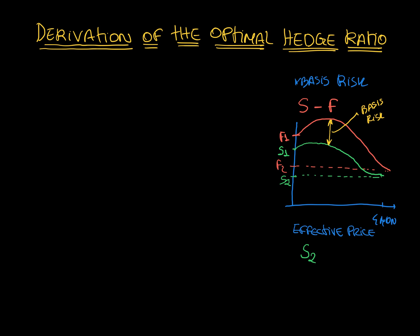minus the change in the futures price, to be more precise. So this is our notion of effective price, which is the key concept needed to derive the optimal hedge ratio.